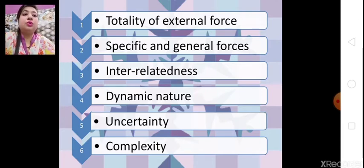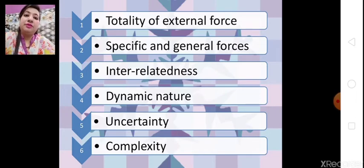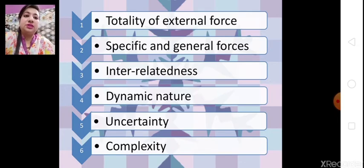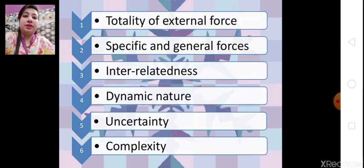So the first feature is totality of external forces — business environment is a study of external forces. Next is specific and general forces. External forces are also divided into two parts: number one is specific force and number two is general force.